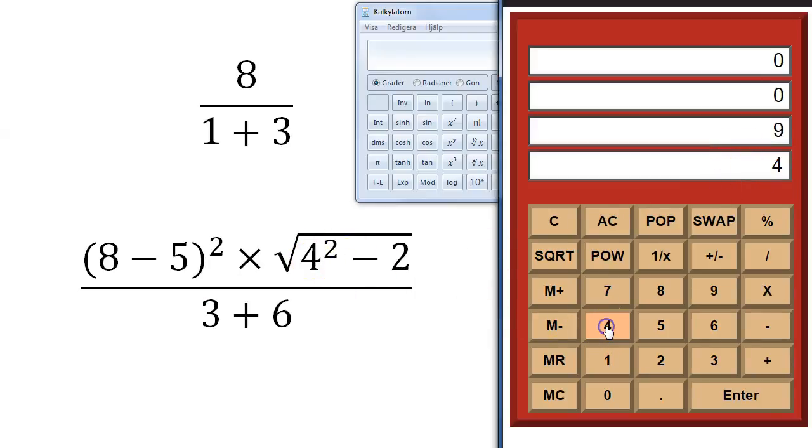So I enter 4. As you can see the 9 moves upwards. 4. Enter. 2. Power. That's 4 to the power of 2. Then I enter 2. Now we have 16, this part. We have 2 here. And I want to subtract them. So I press the minus sign. 14. That's this part. And now I want the square root of this. I press the square root key here.